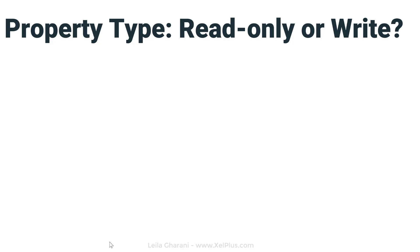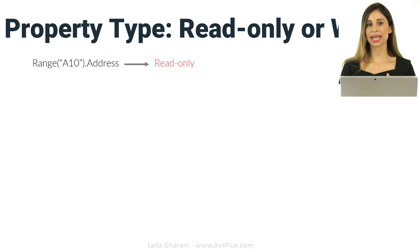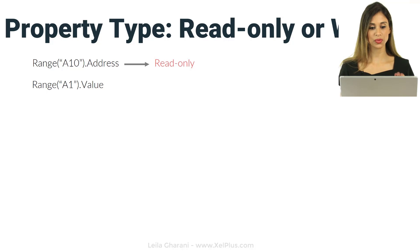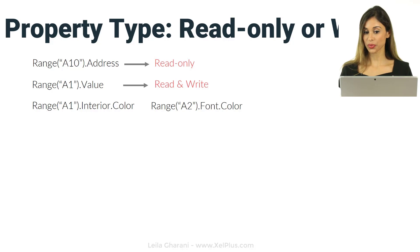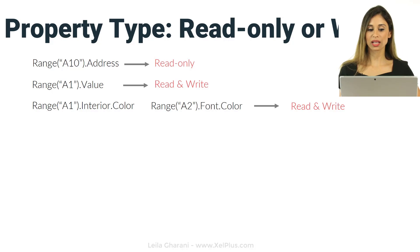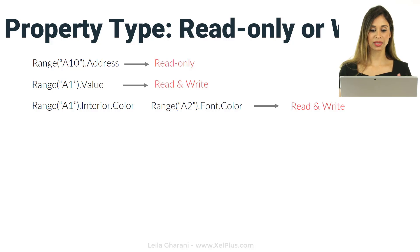Properties can be read-only, or they can be both read and write. For example, range(A1).address is read-only — you can't change the address of a cell, you can just read it. But range(A1).value, range.interior.color, and range.font.color are all read and write — you can get the value or color, but you can also change them.